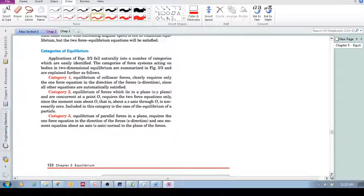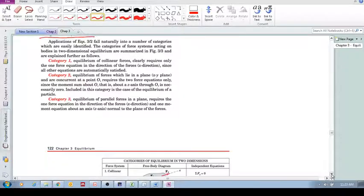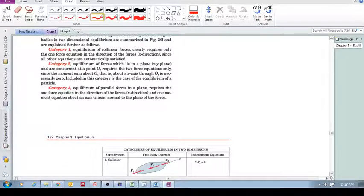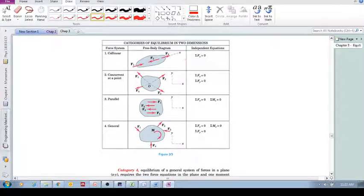Now let's look at categories of equilibrium. These are just different ways that a system can be in equilibrium. And we have category one, two, three, and there's a fourth one, which we'll just look at in a diagram.